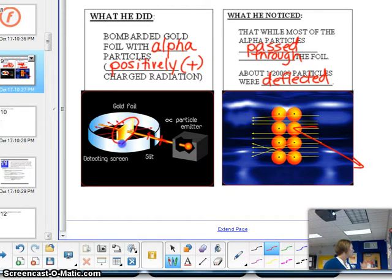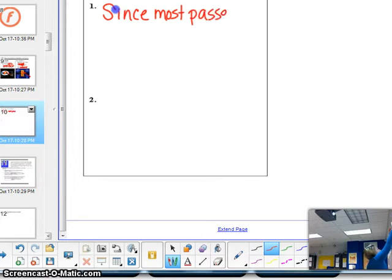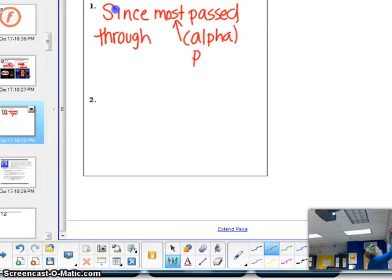So what he concluded, based on that, is he actually concluded two things. Since most passed through, when I say most I'm referring to the positive alpha particles, they didn't really hit anything significant. He concluded that most of an atom is empty space.